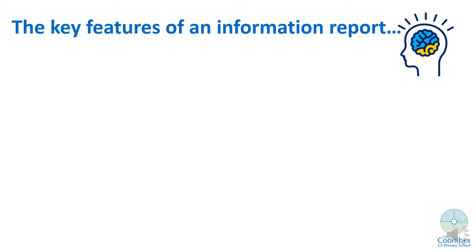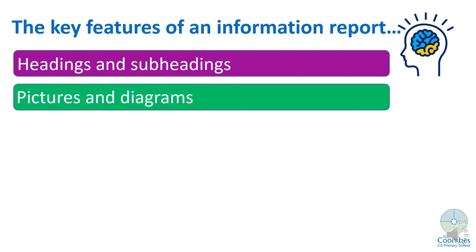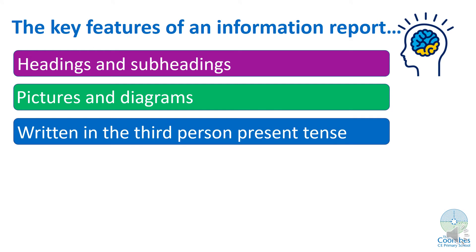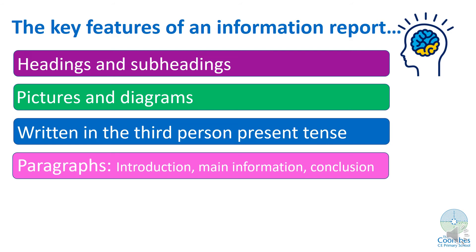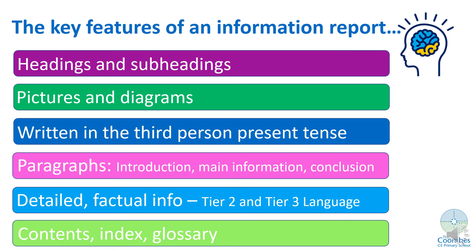The key features of an information report are as follows — hopefully you can remember these. If you want to test yourself, you could pause the video now, see if you can remember what's going to come up on the slide, then start the video again and we'll see if you've remembered them all. Firstly, there will be headings and subheadings. Pictures and diagrams. They will be written in the third person present tense. They will be organised into paragraphs. They will include detailed and factual information. And in an information book you will find a contents page, an index and a glossary. I wonder if you managed to remember them all — well done if you did.